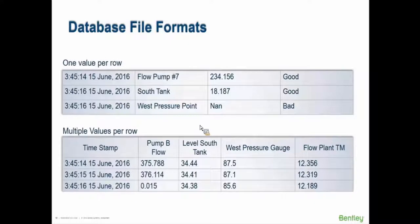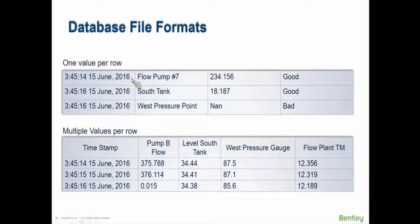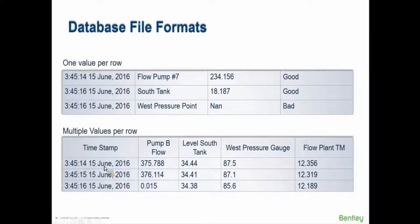What form can the data be in? There are a number of file formats as well as direct connection to the OPC server. One format is: for every row in the table you have a timestamp, the name of the tag in the SCADA system, the value, and optionally a quality index of whether the SCADA system considers it a good or bad data point — one value per row. The other format we accept is multiple values per row, which is common when data is exported to Excel: a timestamp column, labels for what signals these are, and numerical values in the corresponding row.